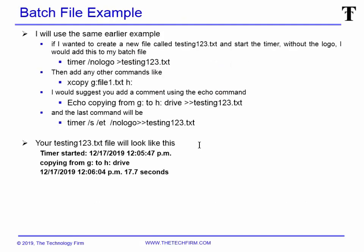Let's go back to the previous example and use timer instead of time. So: 'timer /nologo >> testing123.txt' to start. Your xcopy command doesn't change, your echo doesn't change. Then 'timer /s /et /nologo >> testing123.txt' to stop the timer with the current date and time. Your output will look like: 'Timer started' with date and time, then the echo message, then the final stop time with '/et' giving you date, time, and the elapsed time.